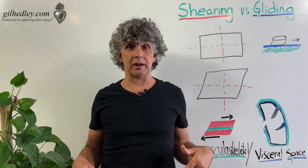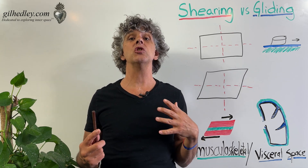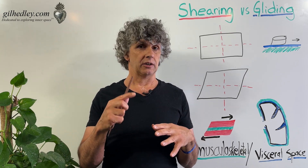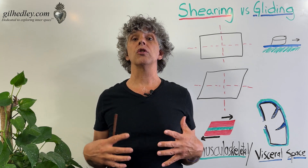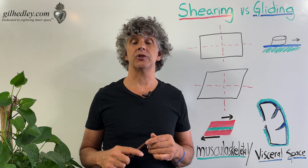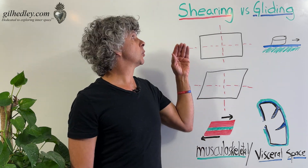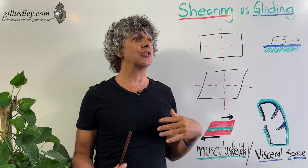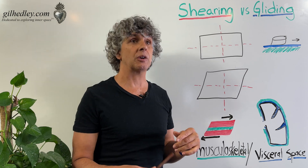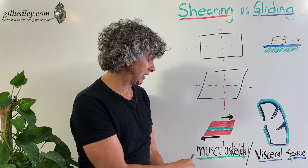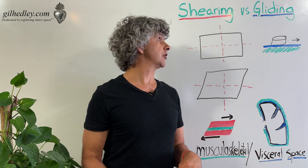We also have in our body our viscera, our guts, inside of our visceral spaces, and they too are demonstrating differential movement relative to the walls of the cavities that they live in and relative to each other. So I use the words shearing and gliding to differentiate between the two different types of differential movement that we can see demonstrated in the musculoskeletal tissues versus the visceral space.